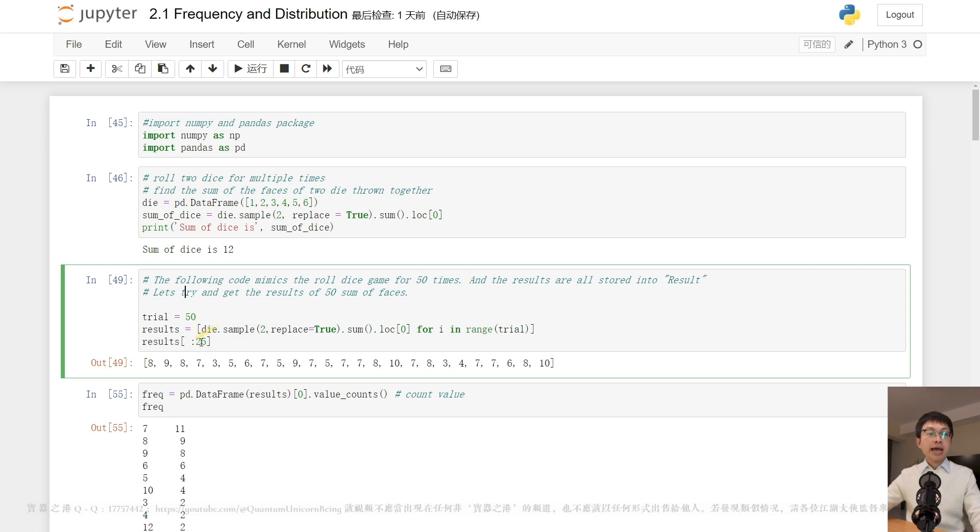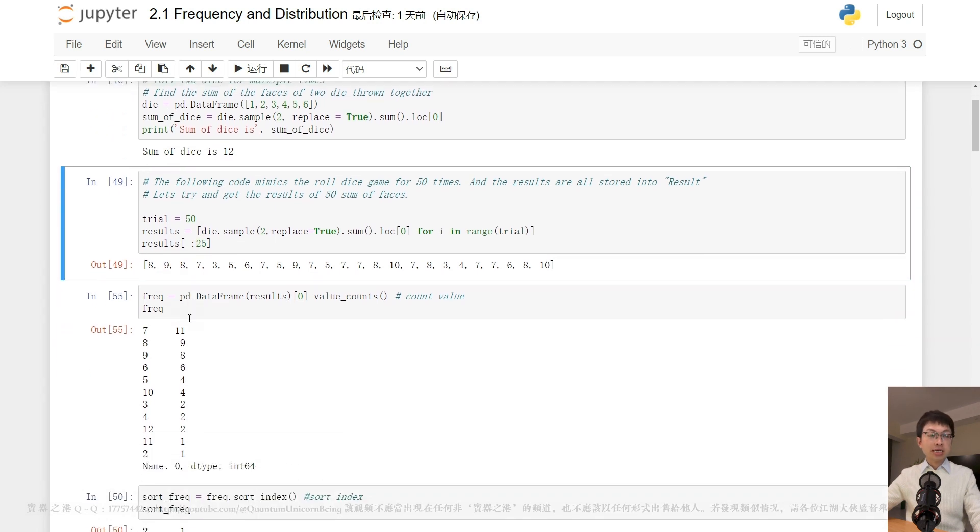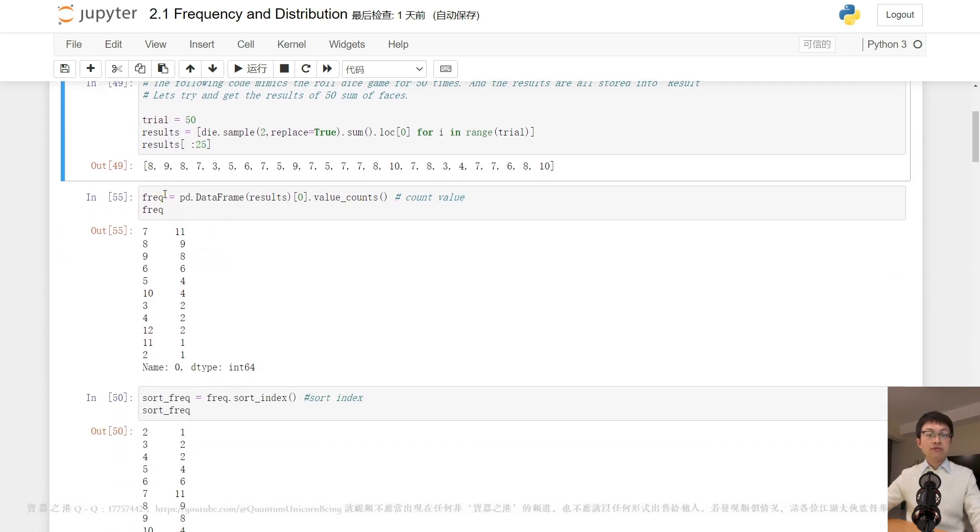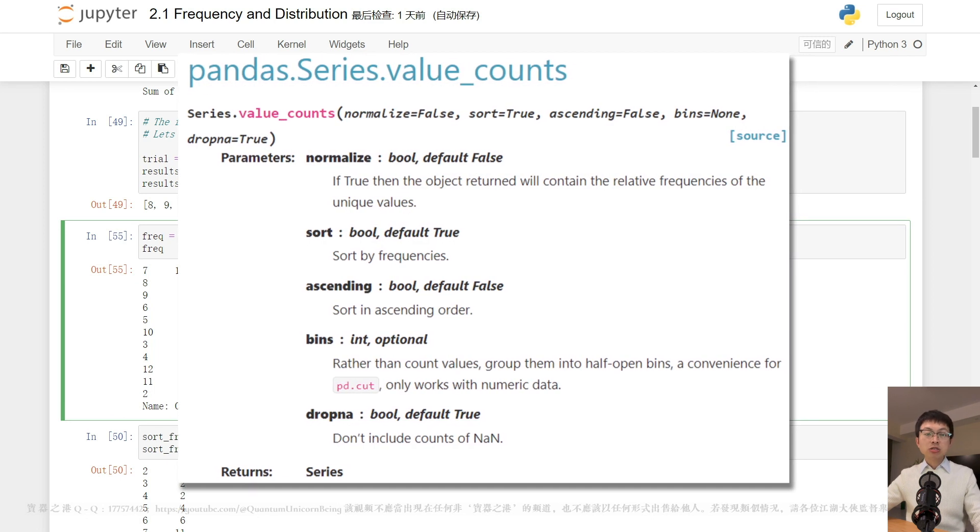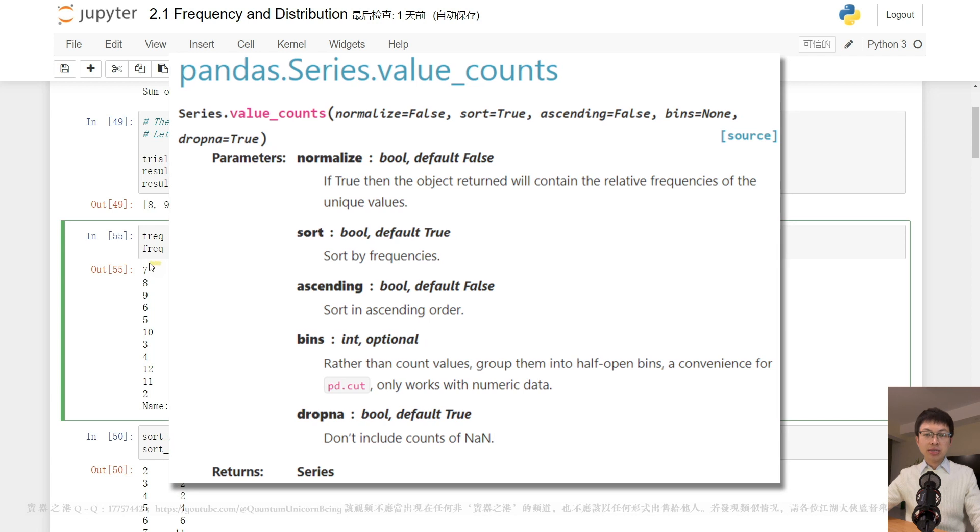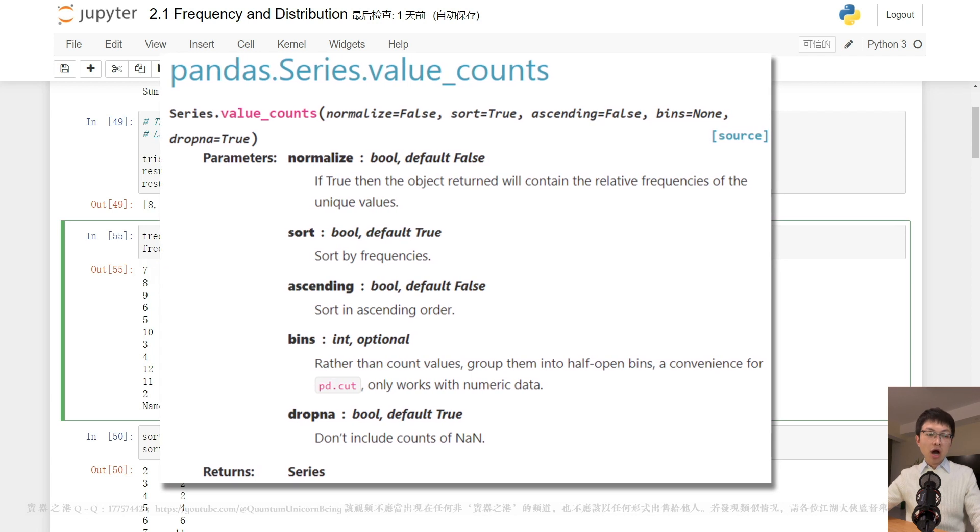Let's now calculate the frequency in the collection of the outcomes. The data frame method value_counts is particularly useful in this regard as it outputs a pandas series with a single column.